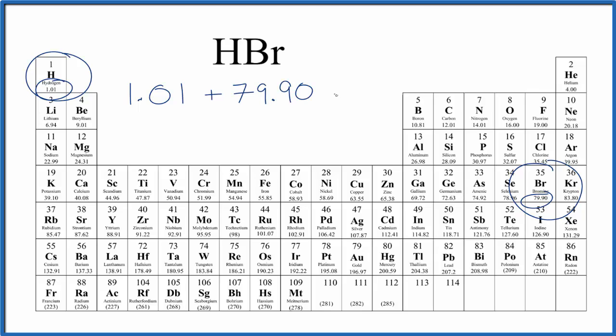So when we add these two numbers together, we get 80.91, and the units are grams per mole. My periodic table rounds to two decimal places. If yours is different, you might get a slightly different answer.